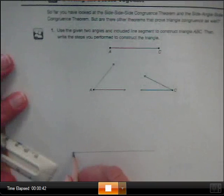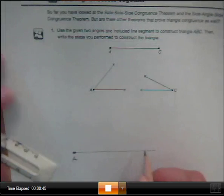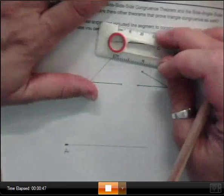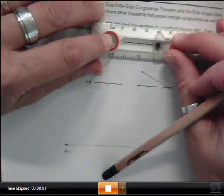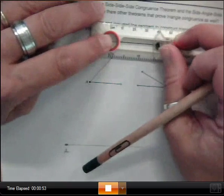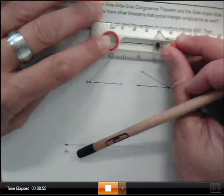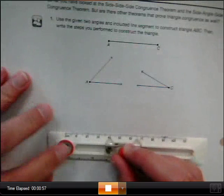So draw your line. To get our C, use your compass, not the ruler part. Come down here, mark your C.